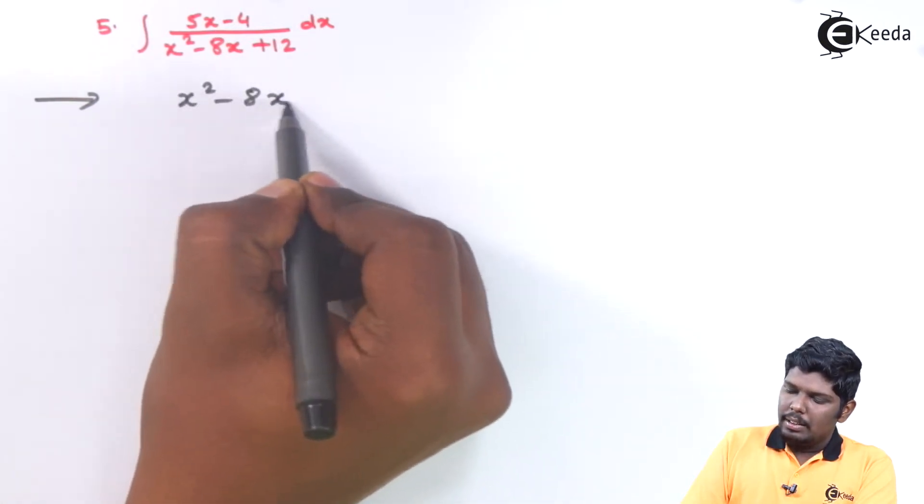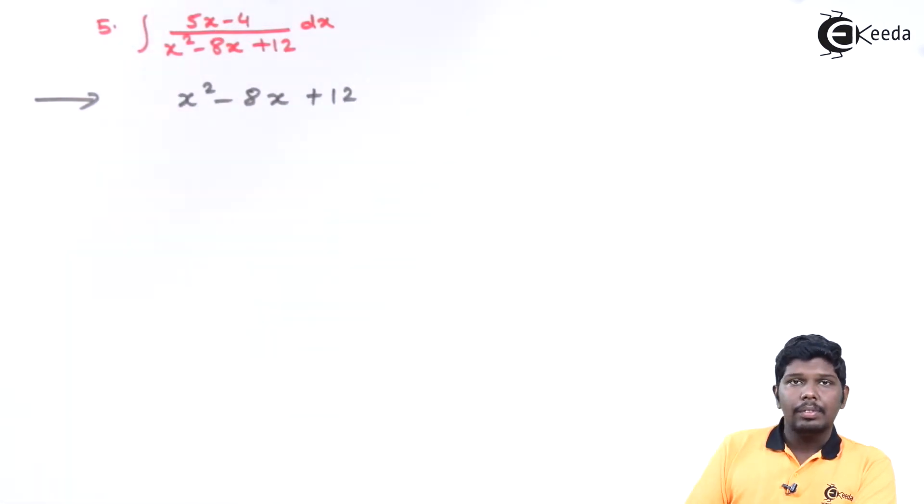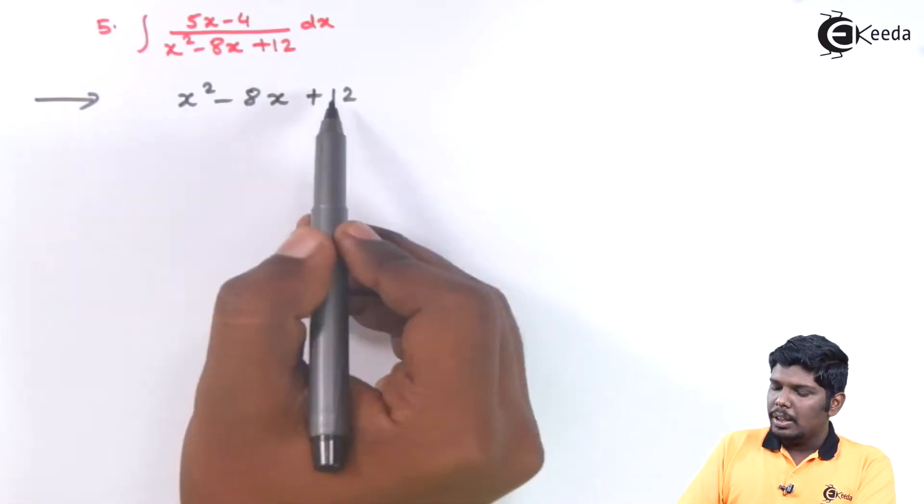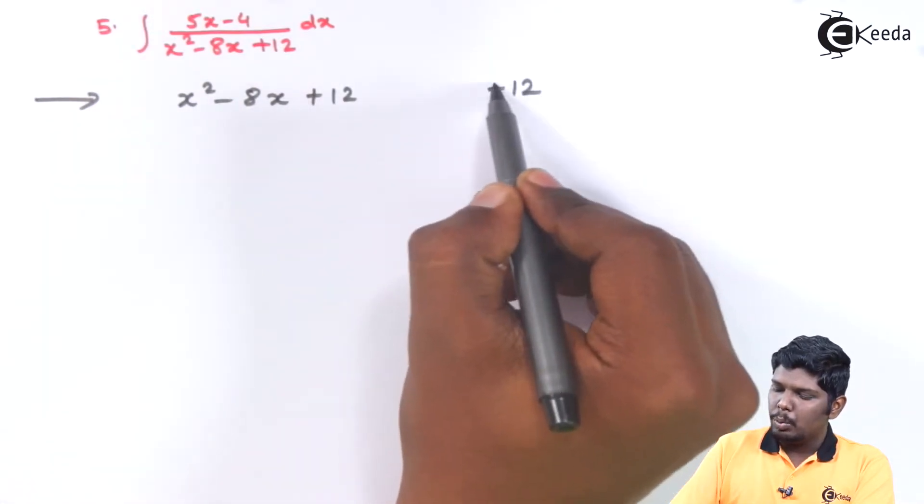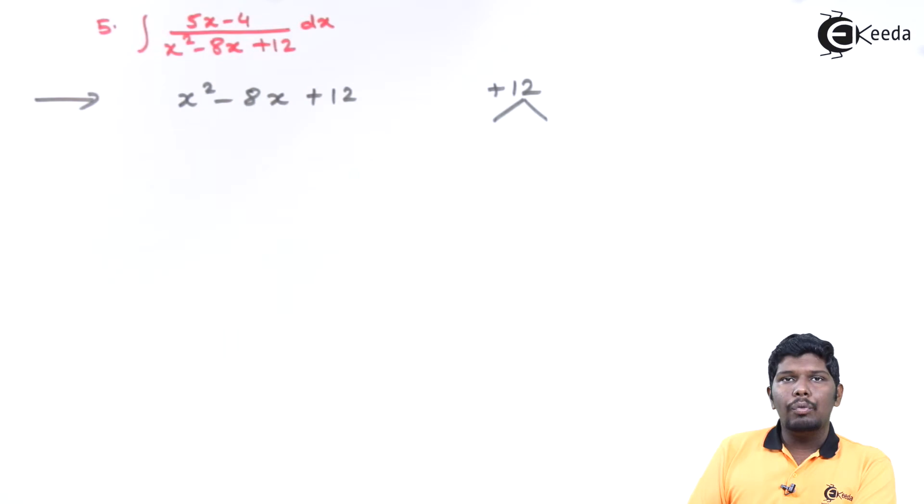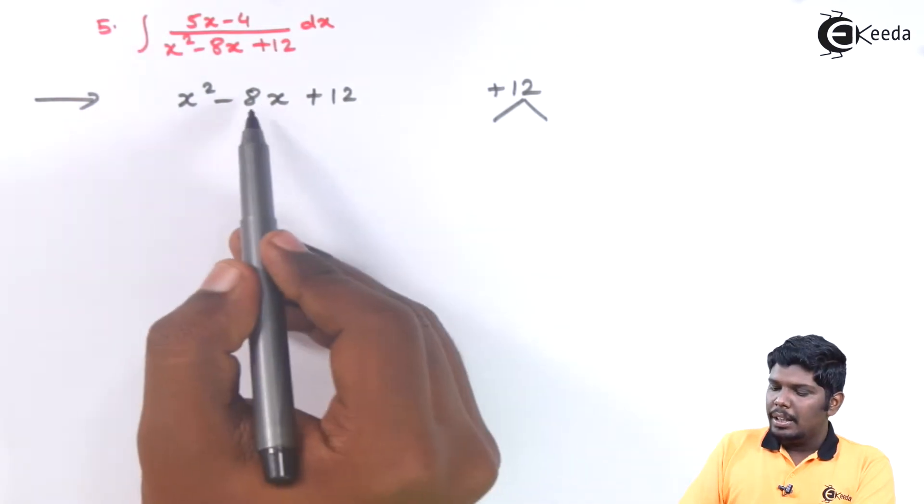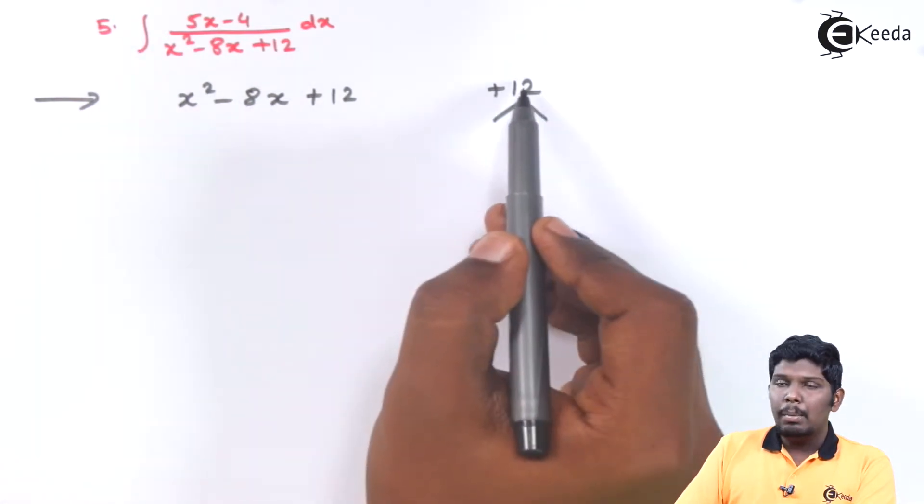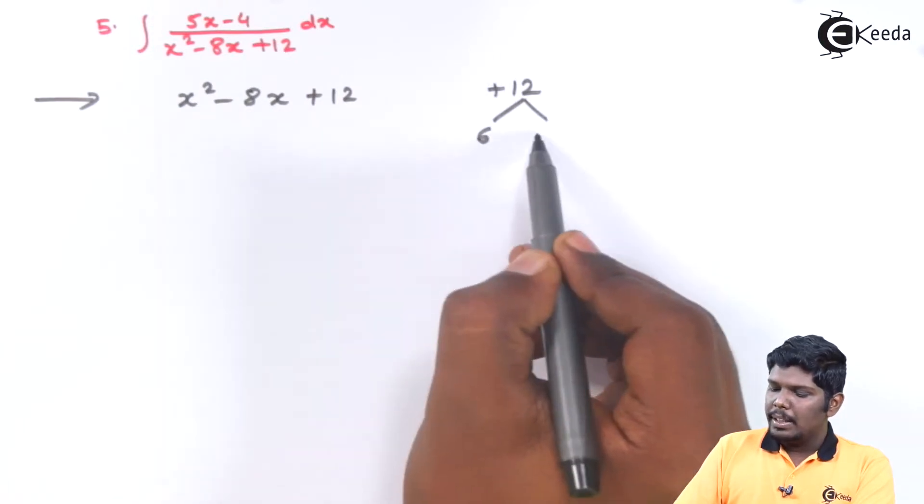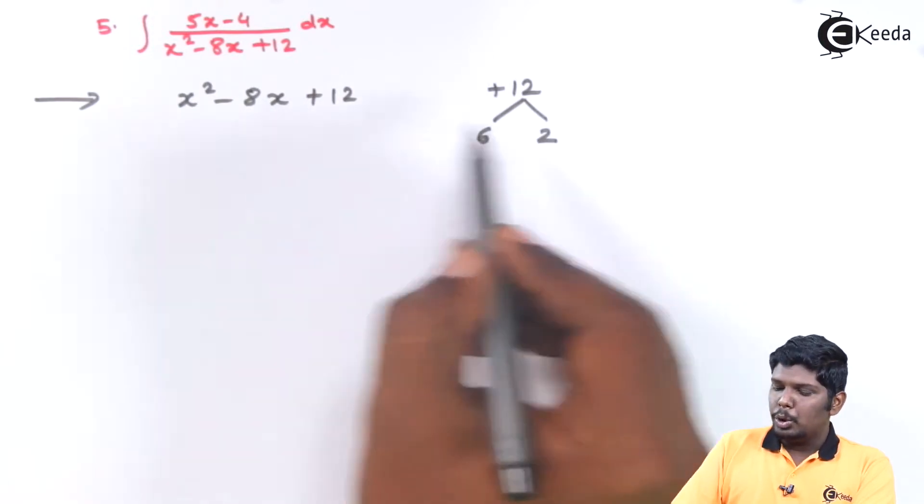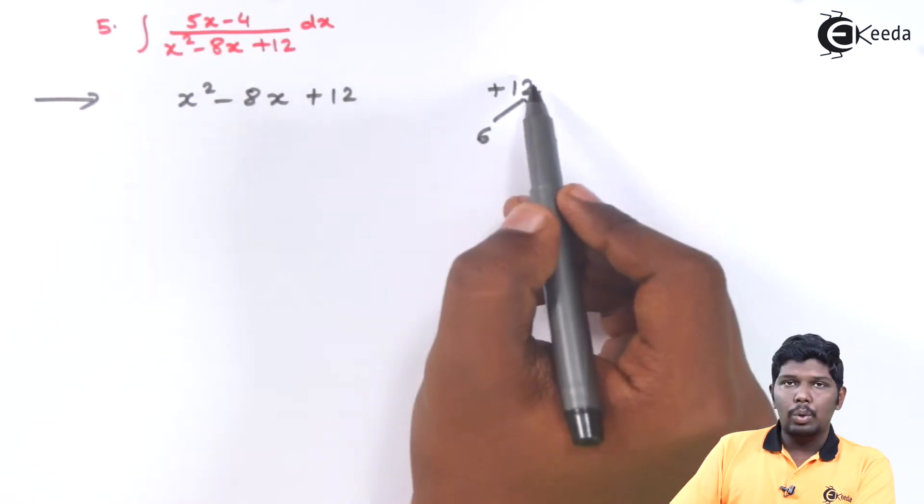x square minus 8x plus 12. As you can see the product is 1 into 12 that is plus 12. And we need two factors such that the addition will give you 8 and the multiplication will give you 12. And the two factors can be 6 and 2, as 6 plus 2 is 8 and 6 into 2 is 12.